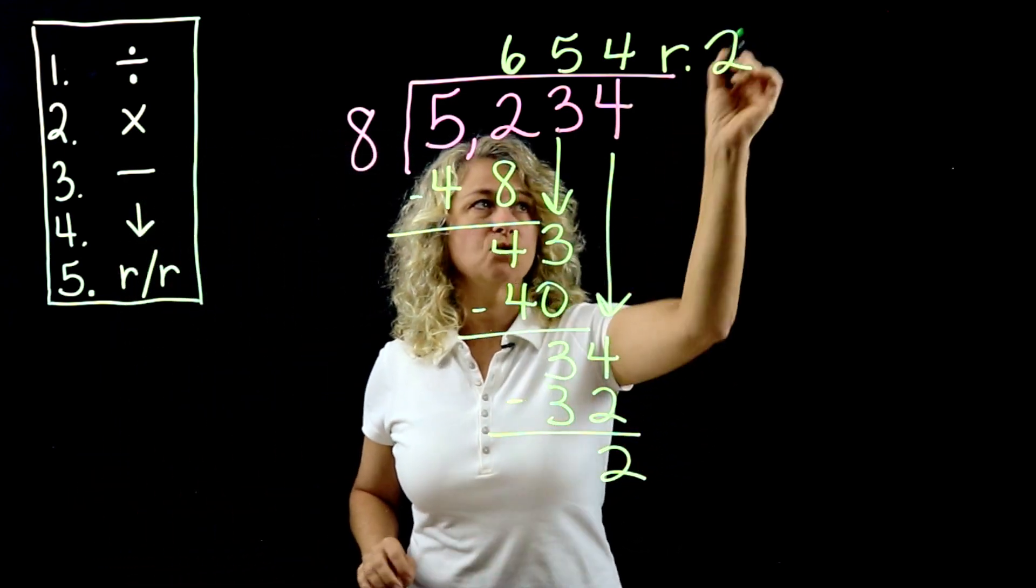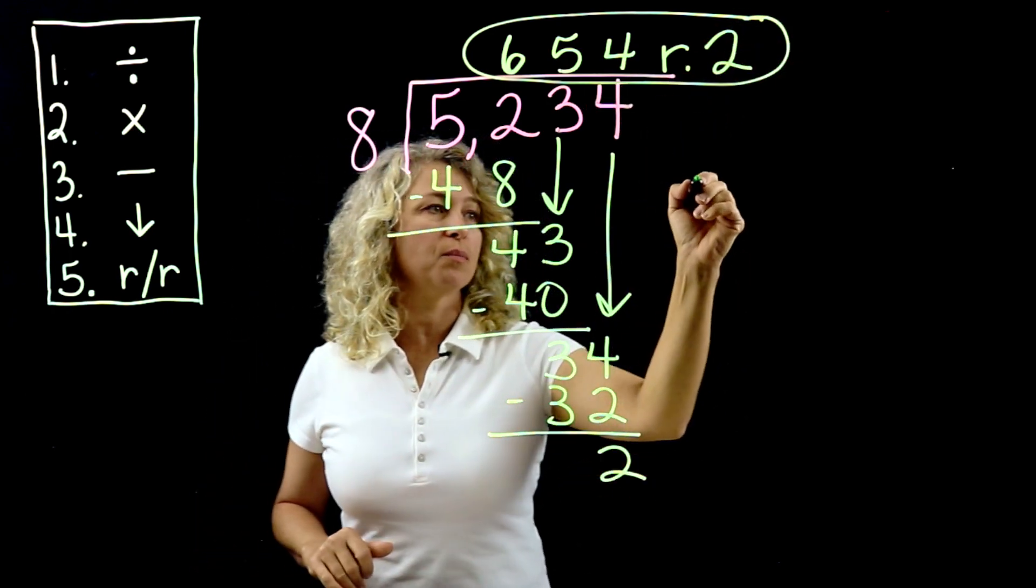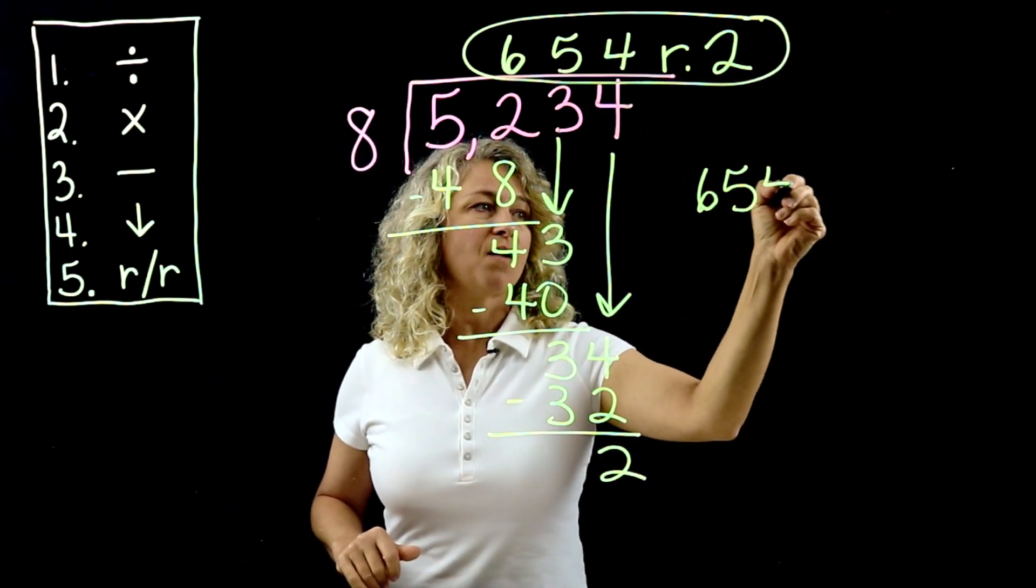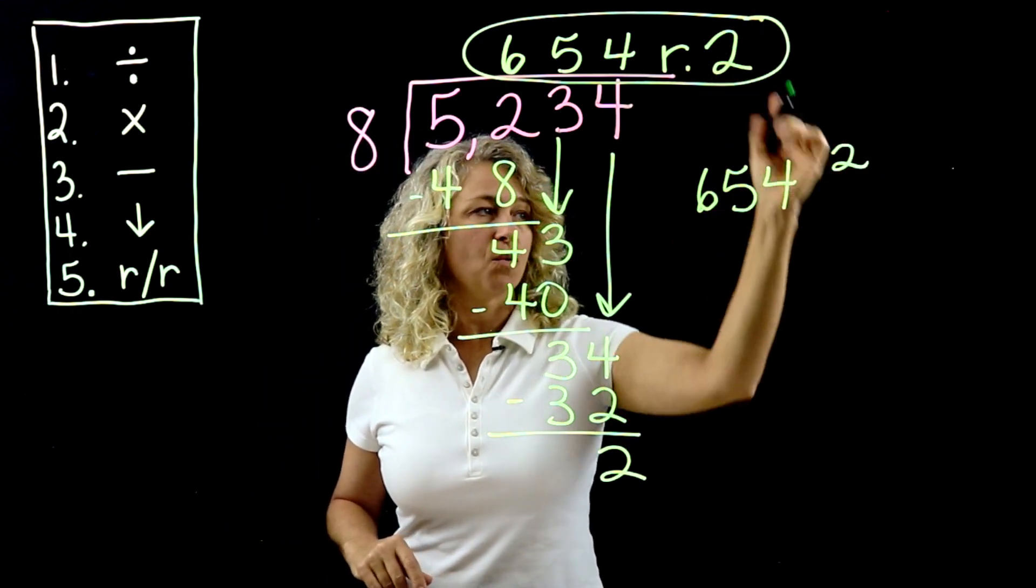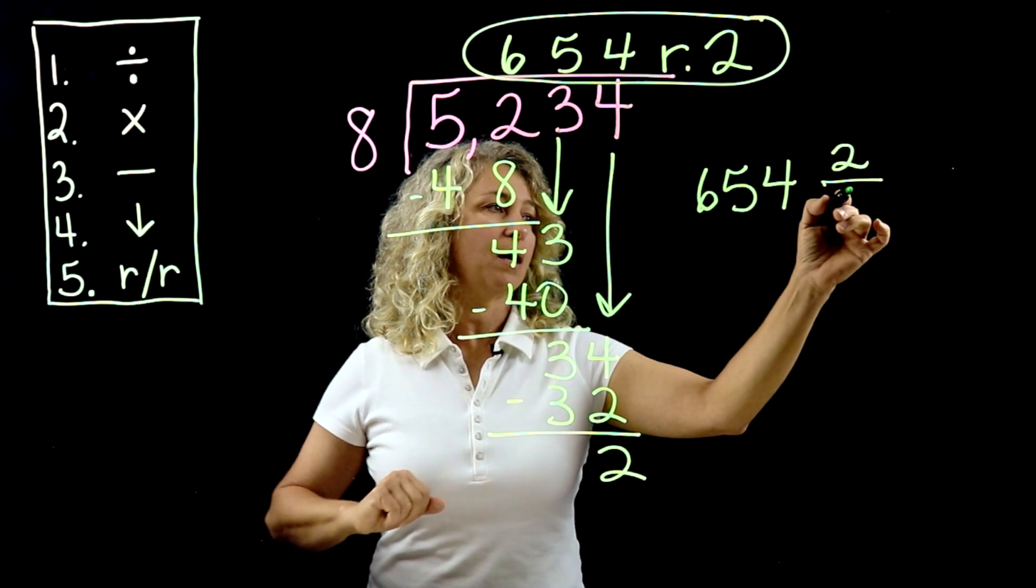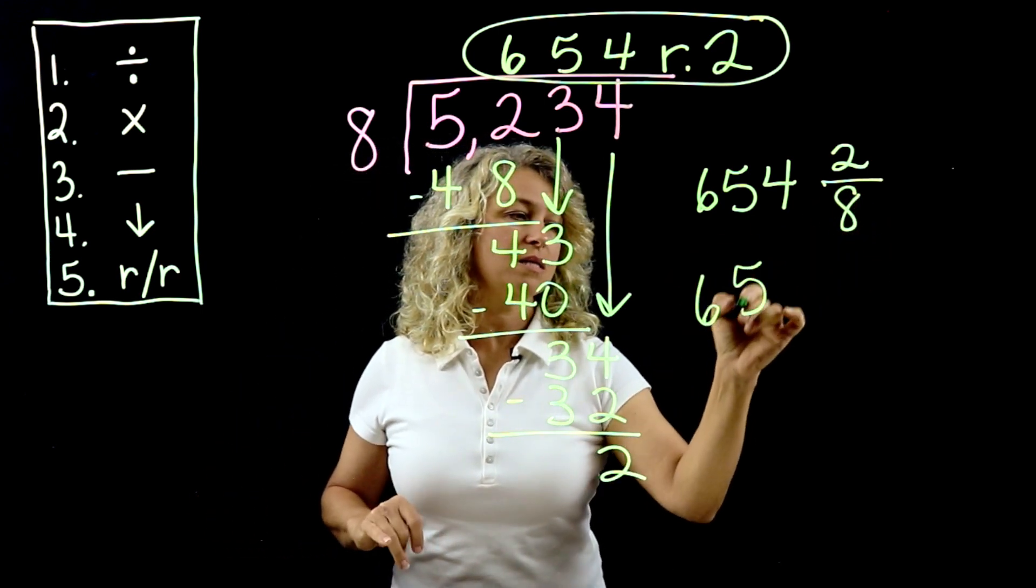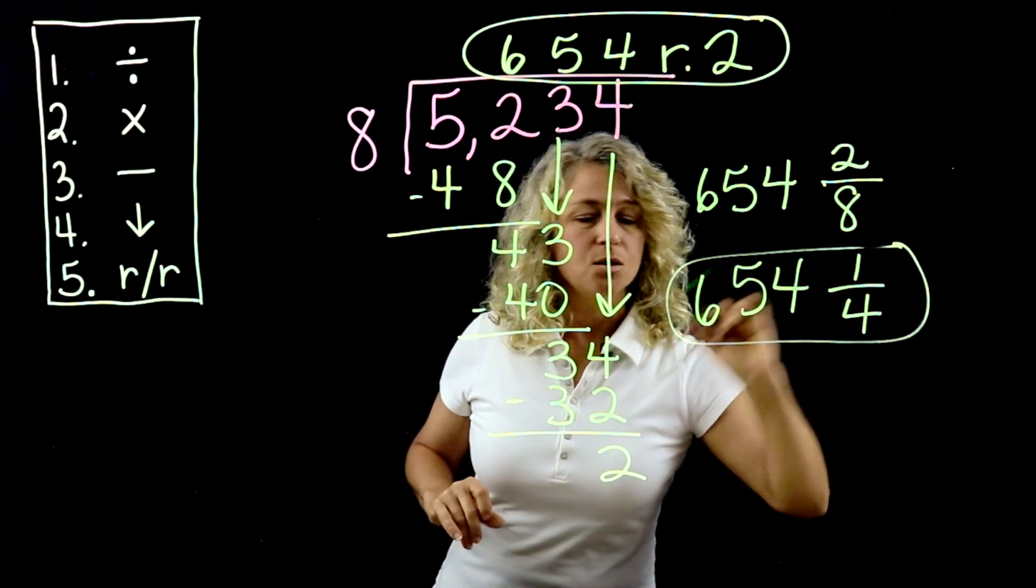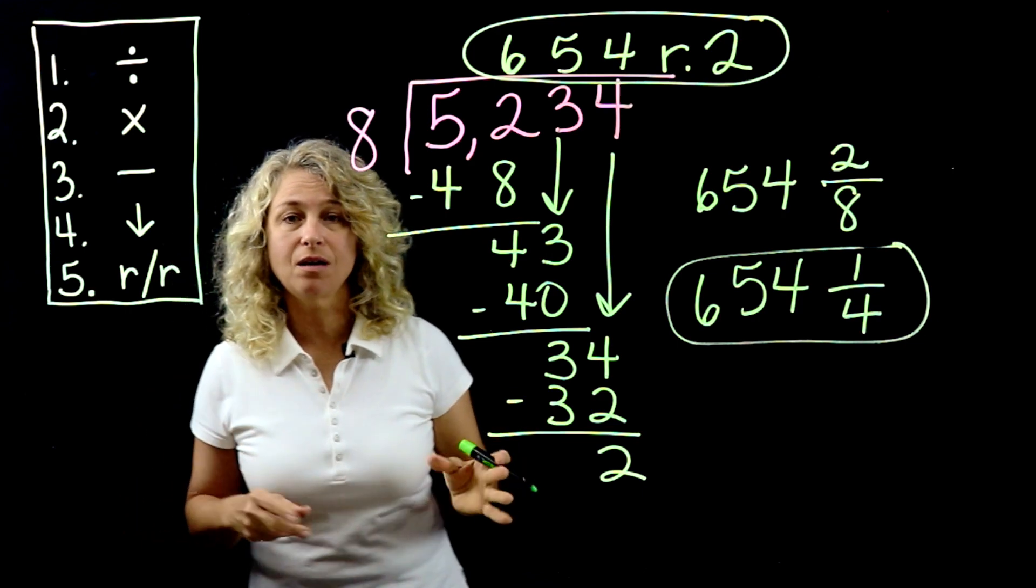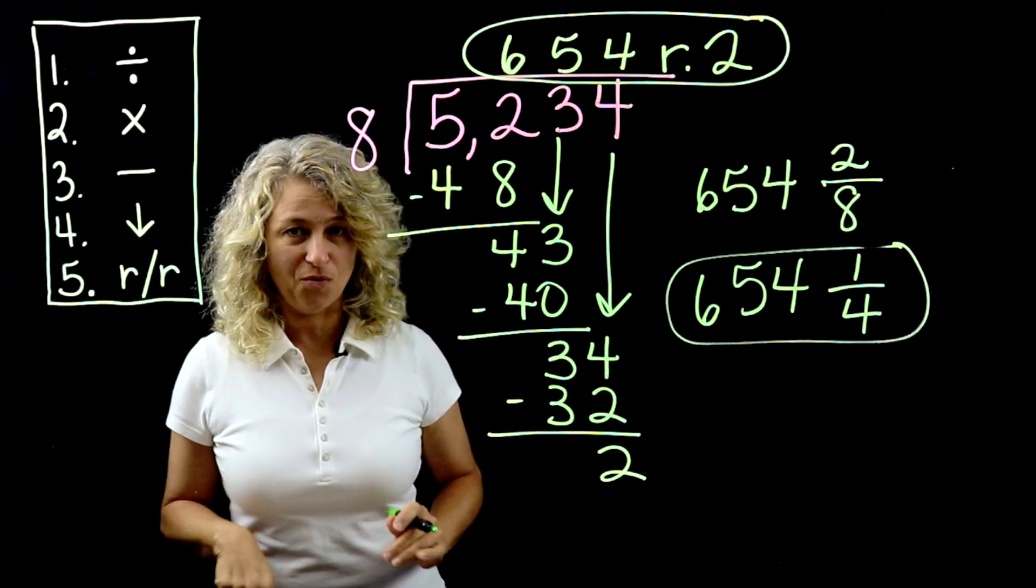Okay, so you can write it like this. Here's your quotient. Or if you want to write it like a fraction, remember how we did it last time: 654 and this is your numerator, and your denominator is 8. And this can be simplified to 1/4. Okay, so there you have it. Practice some, follow each step, and you'll be a pro before long.